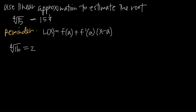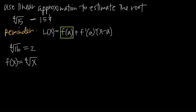Instead of using 15, we're going to replace 15 with x and call our function f(x) equal to the fourth root of x. When we find the linear approximation equation L, we need three things: we need f, we need f', and lastly we need a value for a. We're going to plug in for those three things in order to get our linear approximation equation.